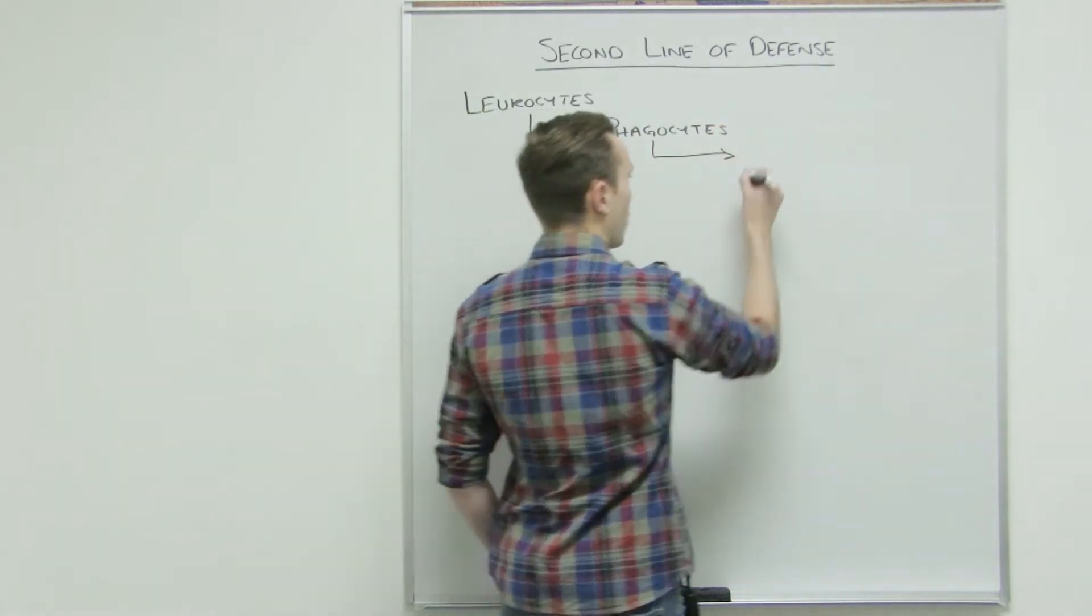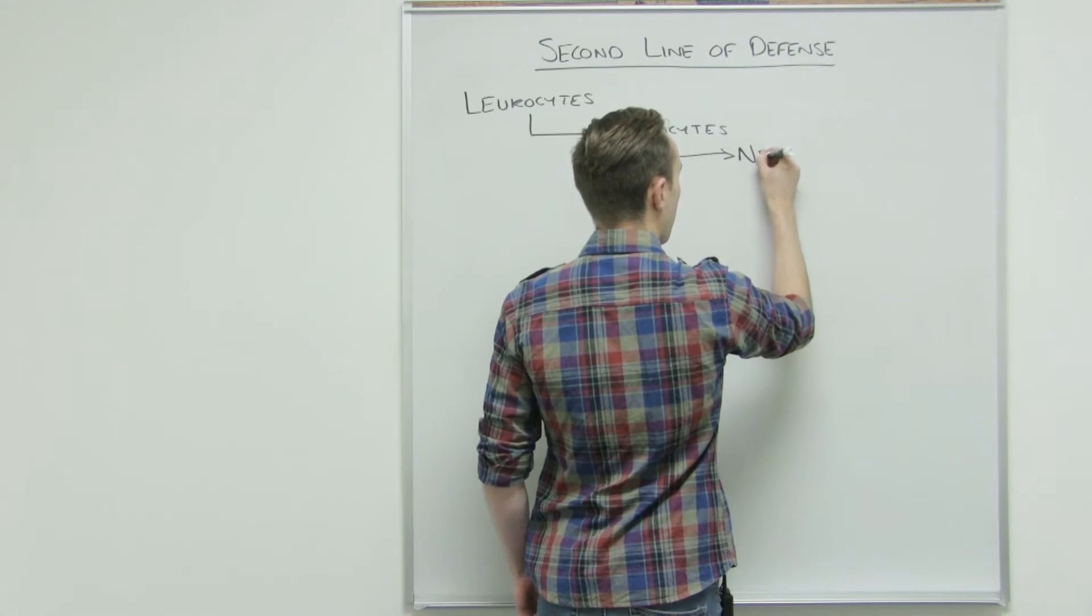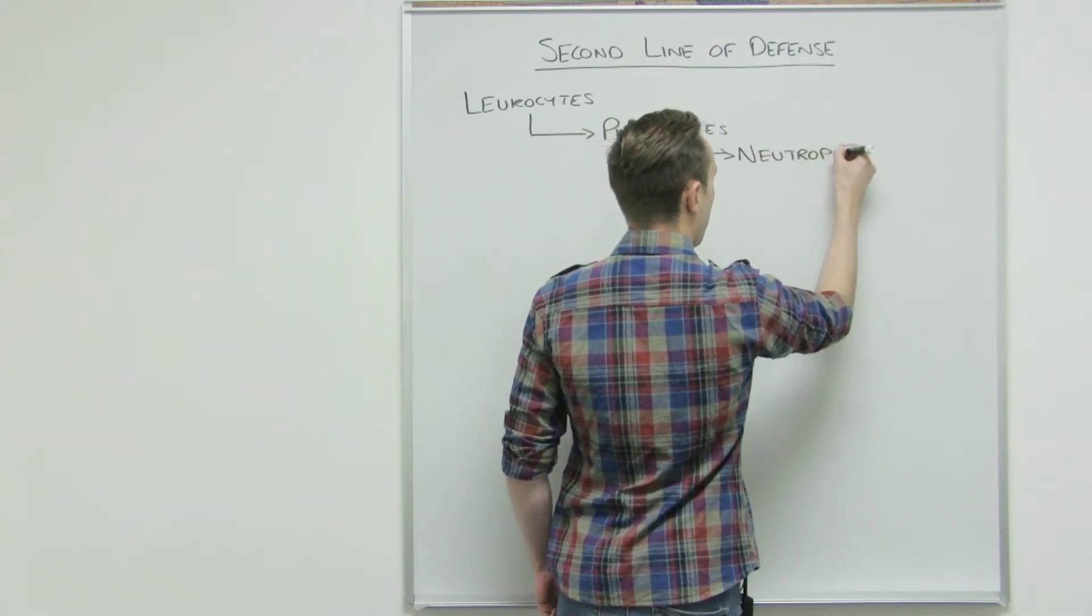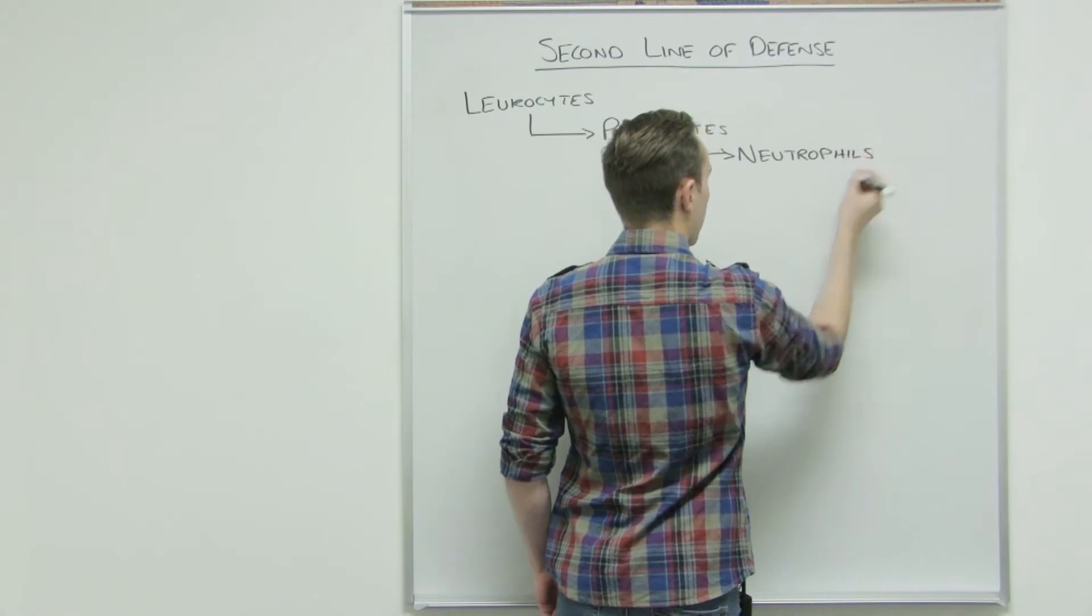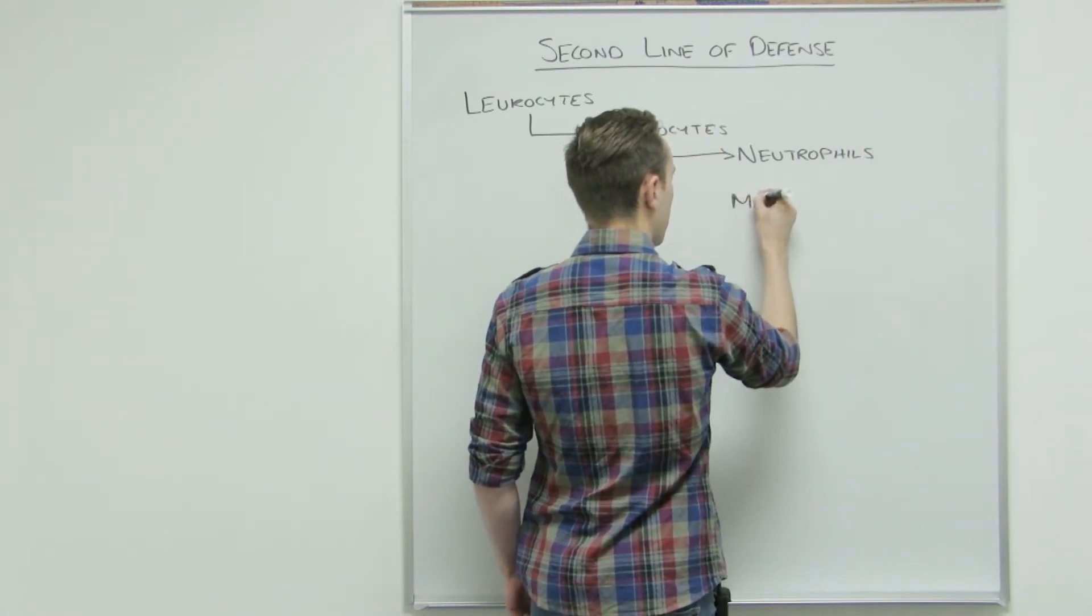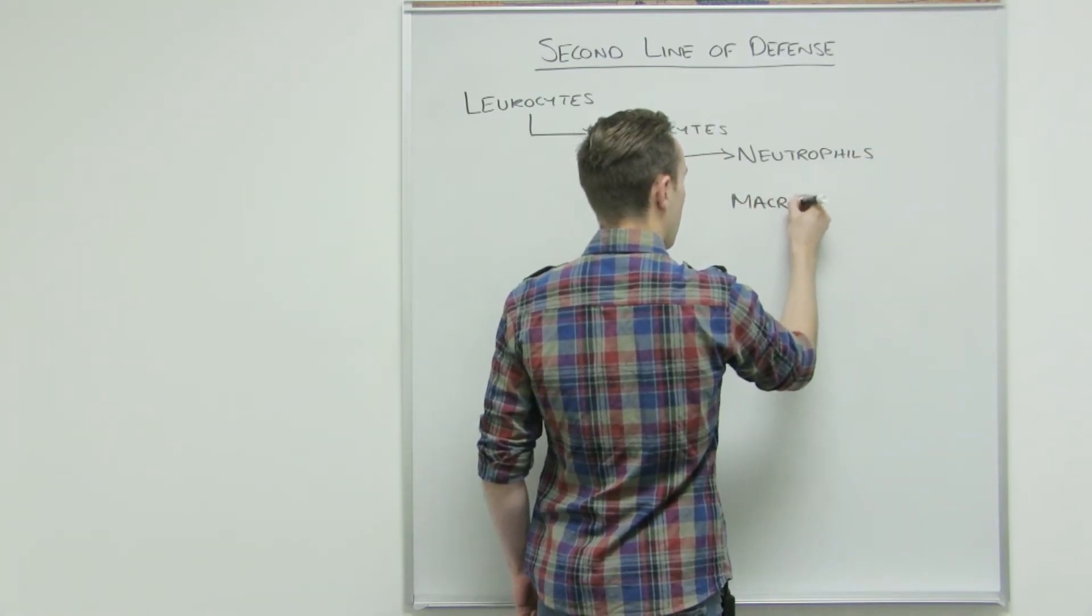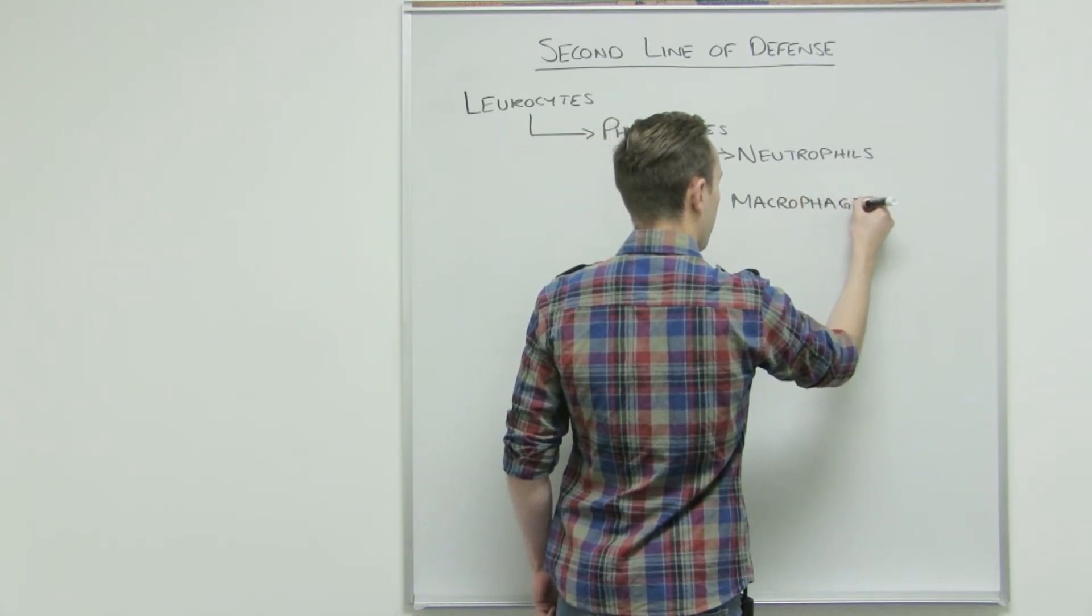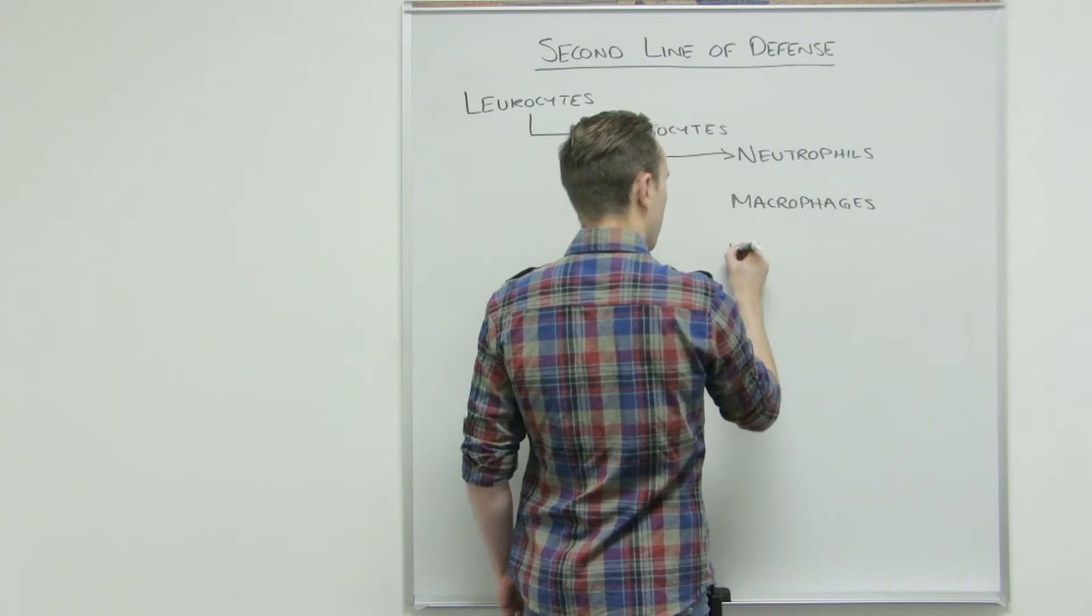And then our three phagocytes are neutrophils, macrophages, and dendritic cells.